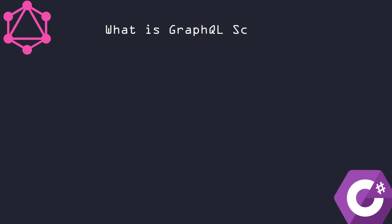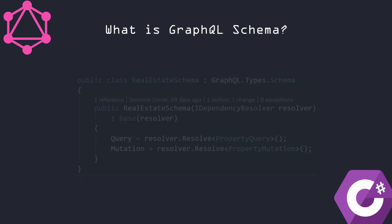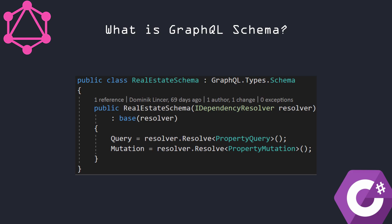What is GraphQL schema? It's kind of an easy question. GraphQL schema is just a container where we are registering queries and mutations. I created one global schema because I have a small app, and I registered inside it the query property and the mutation. What is important is that we can have only one root query and only one root mutation, and we need to define everything inside of it.